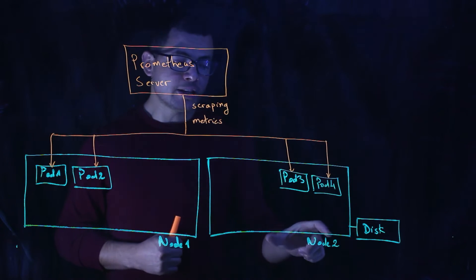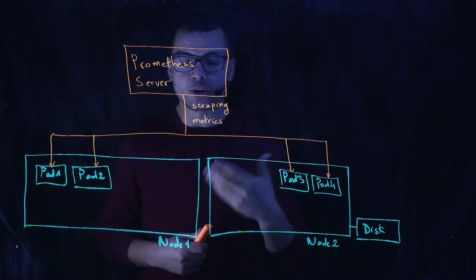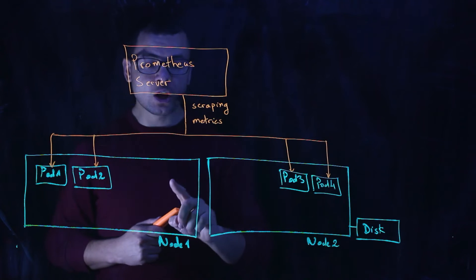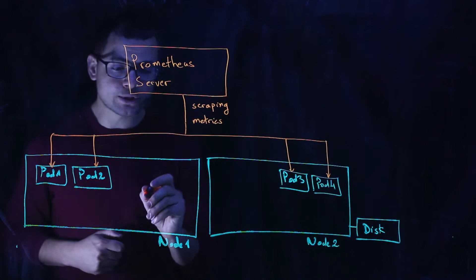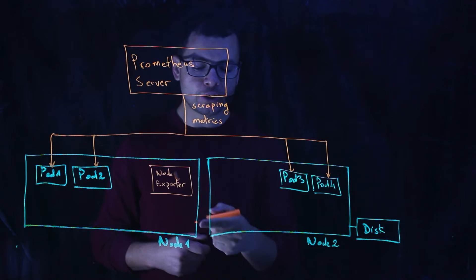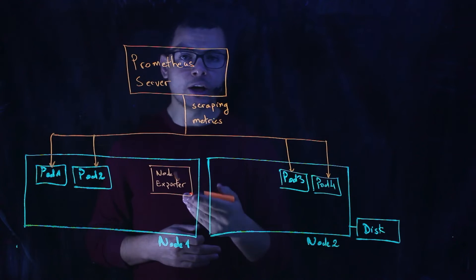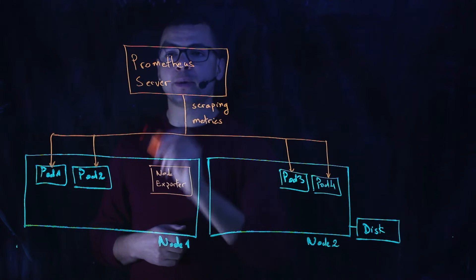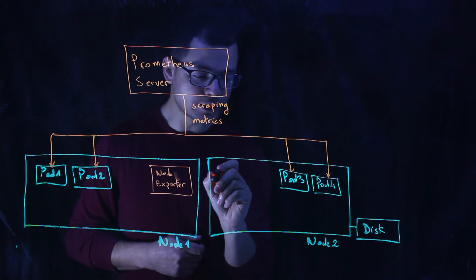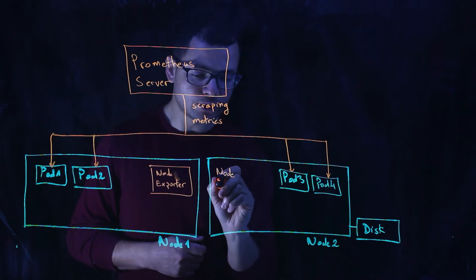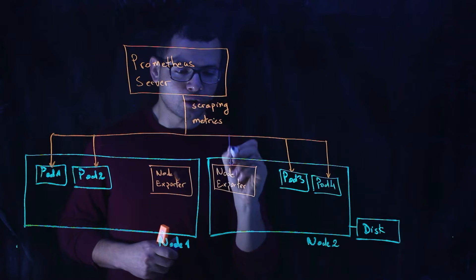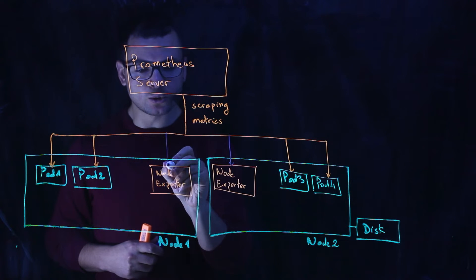But what if we want to export data from inside the nodes themselves, to get information about resource consumption per node? In this case, we need to use the node exporter, which is another Prometheus component. The node exporter is a pod installed inside each node. It queries the node to get resource utilization, then sends that data back to the Prometheus server. Each node will have a pod called node exporter installed inside it, and Prometheus server communicates directly with the node exporter to get those metrics.